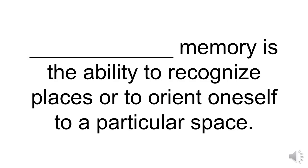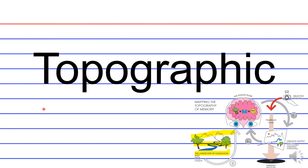Blank memory is the ability to recognize places or to orient oneself to a particular space. So what type of memory is this? That would be topographic memory.